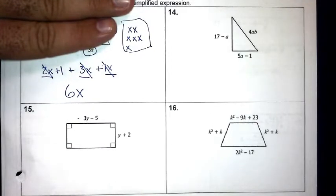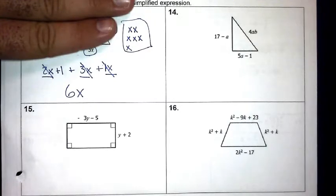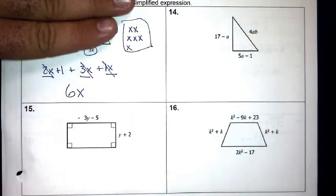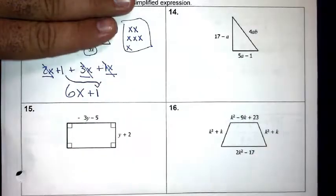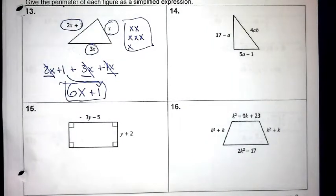What about the plus 1? Is there an x there? No. So is it considered part of the x? No. Is there anything that is just a number? It's just plus 1 — that's all we have left. So if that's all we have left, just put it on the end. The final answer is 6x plus 1.